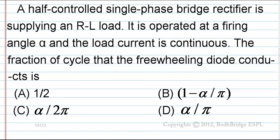A half-control single-phase bridge rectifier is supplying an RL load. It is operated at a firing angle alpha and the load current is continuous. The fraction of cycle that the freewheeling diode conducts is: option A: 1/2, option B: 1 minus alpha by pi, option C: alpha by 2pi, option D: alpha by pi.